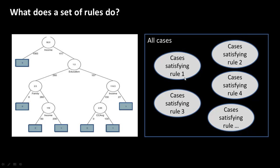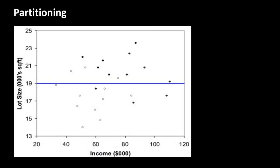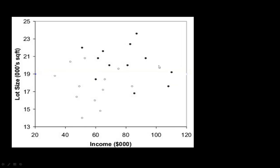If it's 50-50 or very close to that, then the rule is not really helping us. So what we would really like is for the rule to classify all the cases into fairly homogeneous groups. By homogeneous, we mean the group consists of like types of cases — buyers, non-buyers, owners, non-owners, etc. What we have done by partitioning is to divide the whole space into two regions.